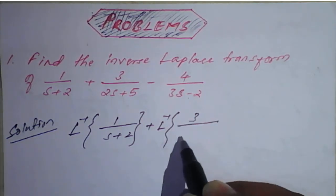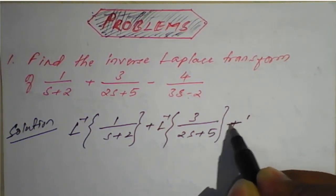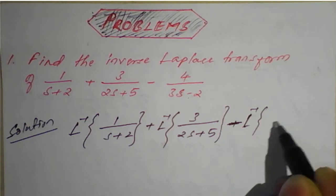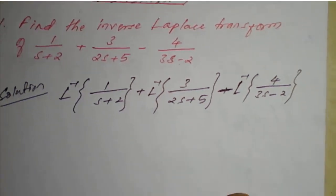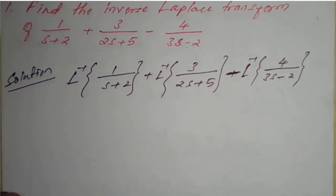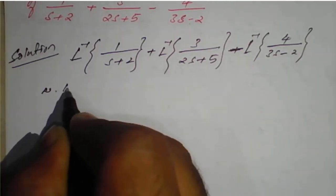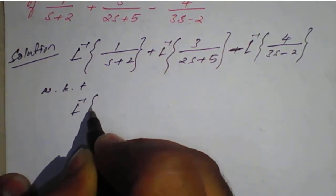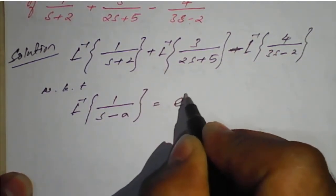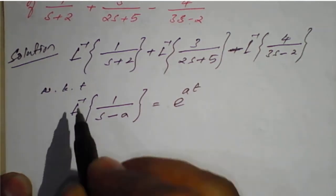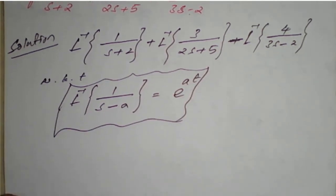Minus inverse Laplace of 4 divided by 3s minus 2. We know that the inverse Laplace transform of 1 upon s minus a is e raised to at. And inverse Laplace transform of 1 upon s plus a is e raised to minus at. We will use this result for all three terms.